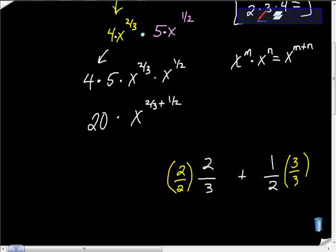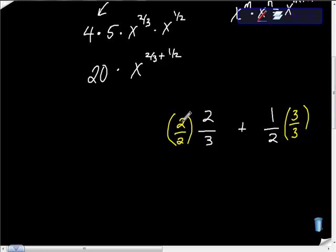Let's check: 2 times 2 is 4, and 3 times 2 is 6, so we have four-sixths. Then 1 times 3 is 3, and 2 times 3 is 6, so we have three-sixths.